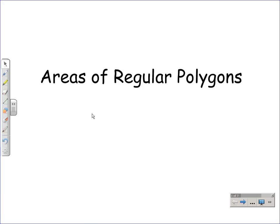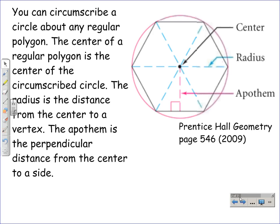Welcome to another math lesson, this is Mr. Pot. Today we're going to be talking about the areas of regular polygons. We're going to take a look at a diagram here first. You can circumscribe a circle about any regular polygon, that's a pink circle around this hexagon.